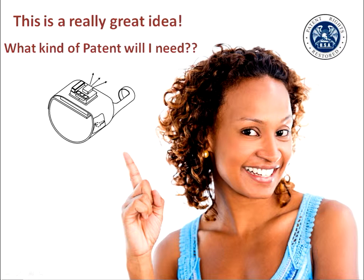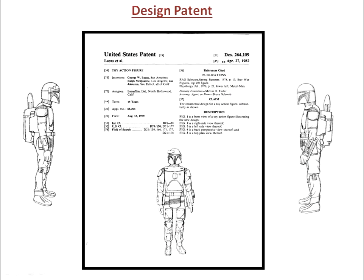There are several different types of applications for patents. Here is a design patent issued for an action figure. A design patent provides protection for the aesthetic value of the thing illustrated in the patent — that is, the look. In this case, the look of a toy action figure.